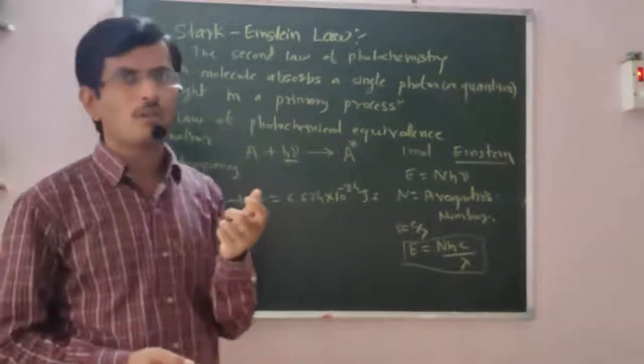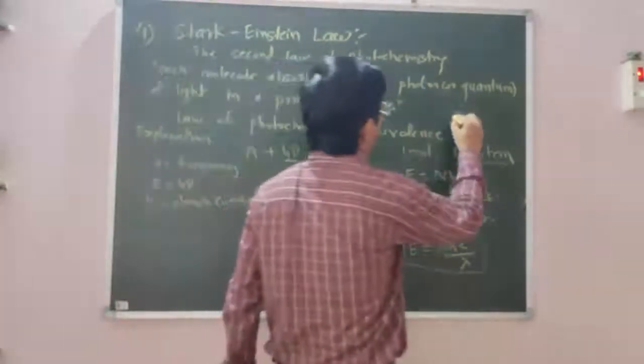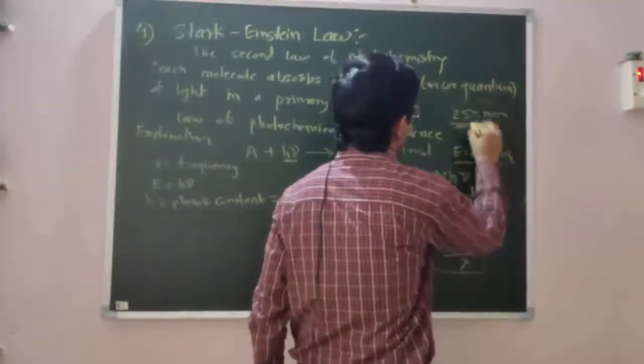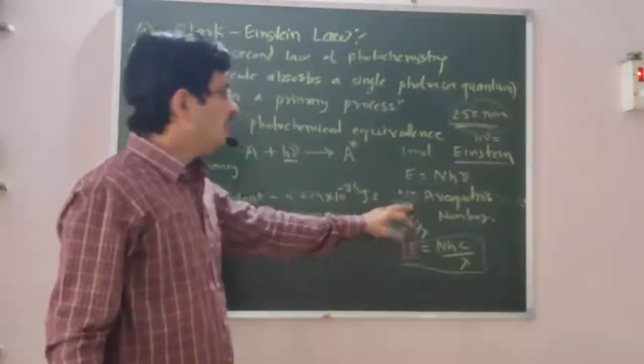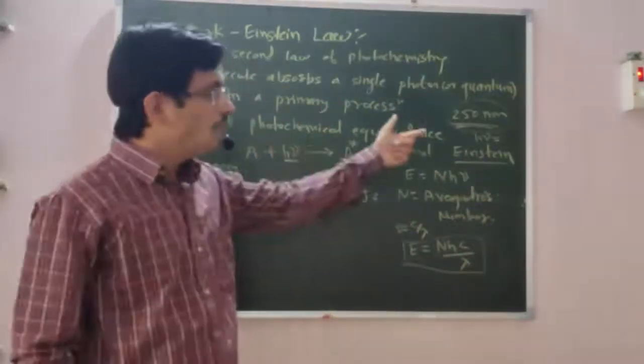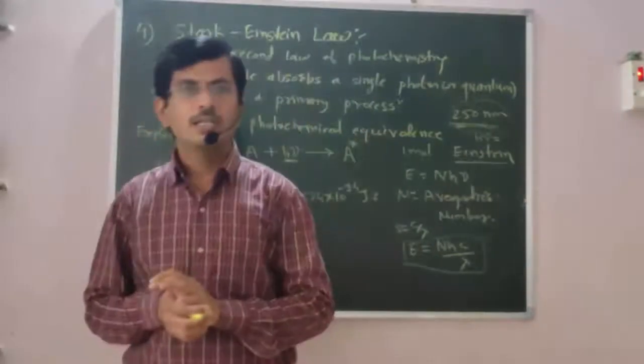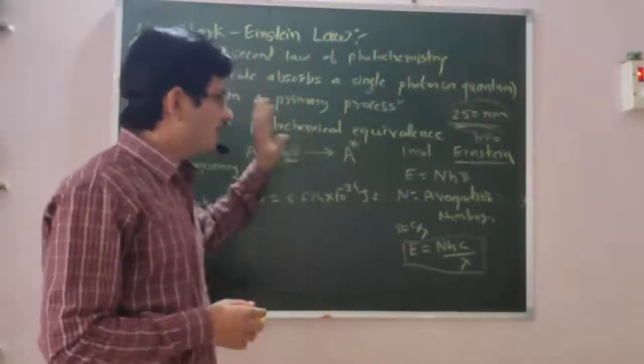Numerical problems can be solved, for example, the light having 250 nanometer wavelength. If the wavelength is given, then the energy of that photon can be calculated. You can use this formula to calculate the energy of the photon related to that wavelength. This is about Stark-Einstein Law and its explanation.